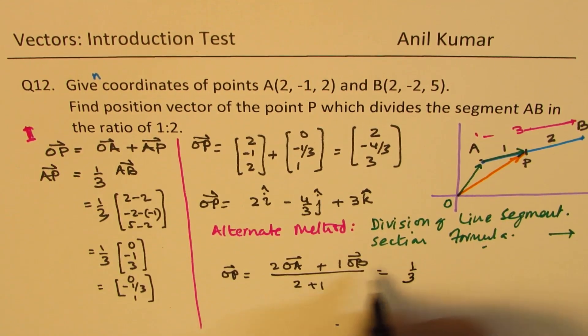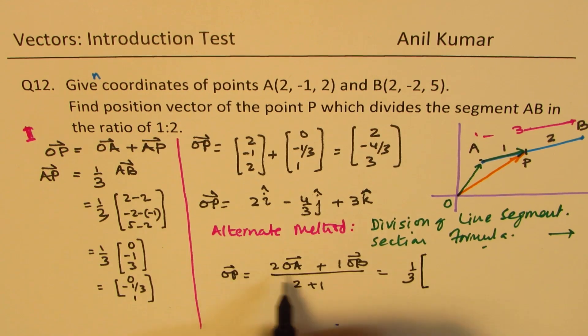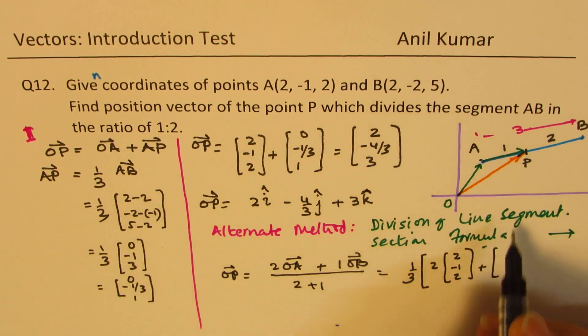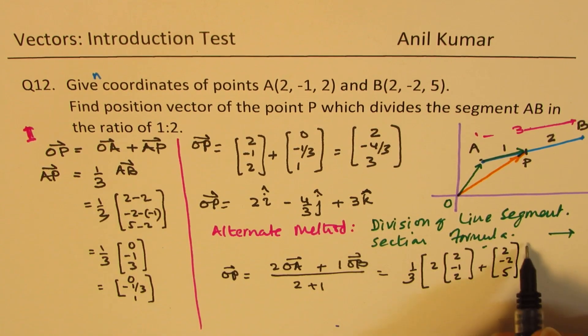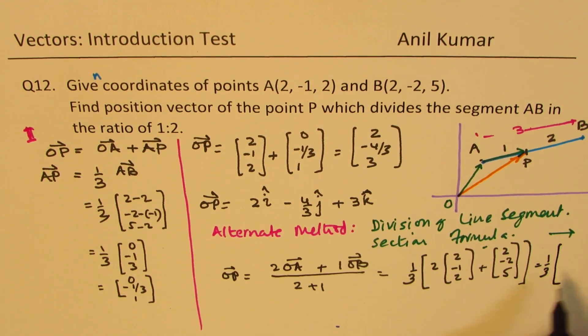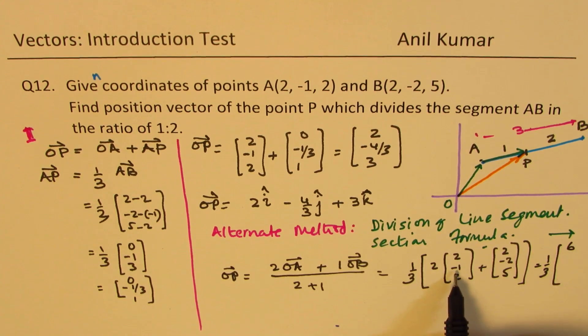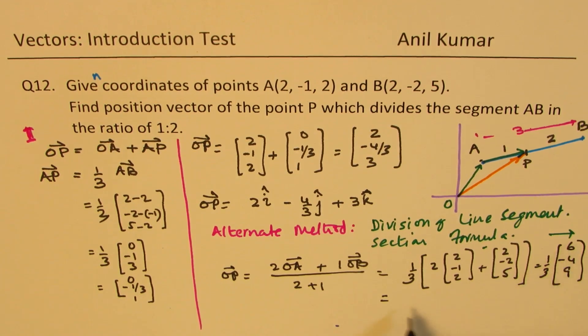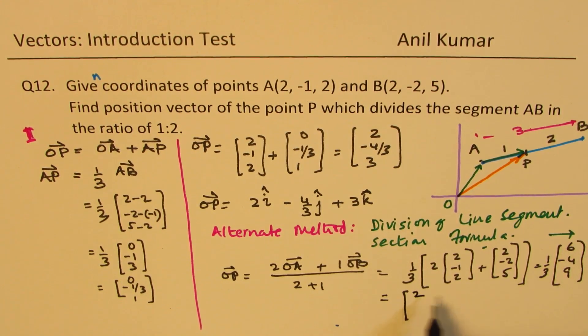OP directly will be equal to 2 times OA plus 1 time OB over 2 plus 1. That helps you to get direct result. 2 plus 1 is 3. 2 times OA is (2, -1, 2) plus OB which is (2, -2, 5). This is a shortcut. When you do this, you get 1 third of (4 plus 2 is 6, minus 2 minus 2 is minus 4, and 2 times 2 is 4, 4 plus 5 is 9).